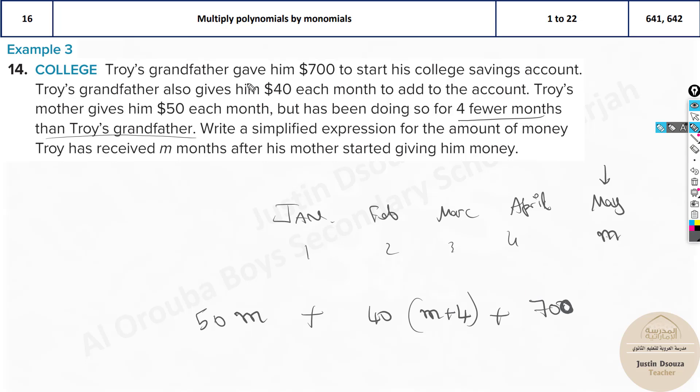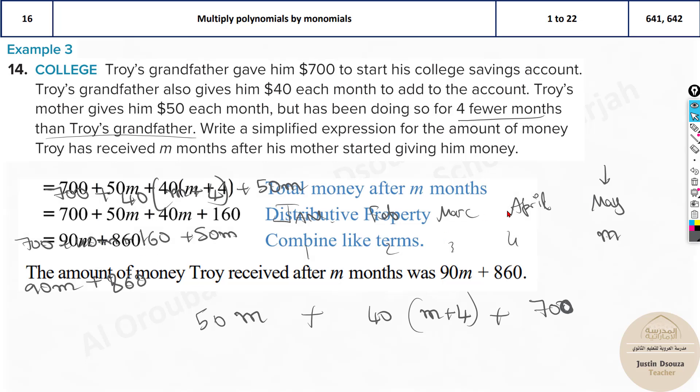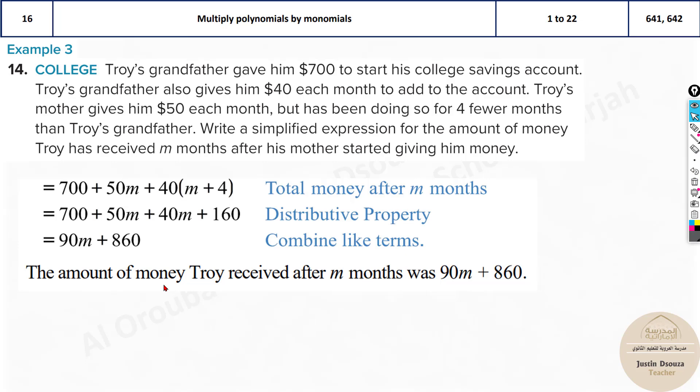First thing is the constant amount of money once only his grandfather gave, that's 700. Plus his grandfather gives 40 every month, but he started 4 months before his mother. So M plus 4 plus 50M. That is what his mom gives. Now we will solve it. 700 plus 40M plus 4 times 4 is 160 plus 50M. And over here, 40 plus 50 is 90M plus 700, 860. This is the amount of money he received after M months.